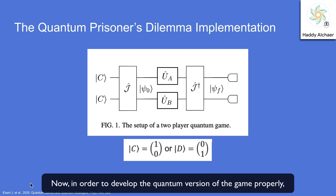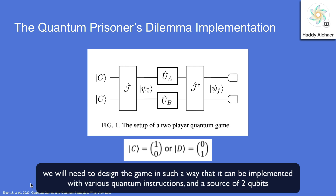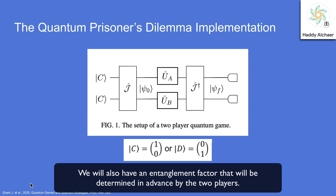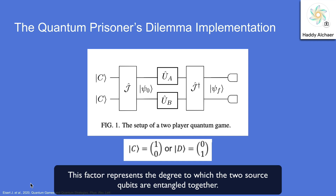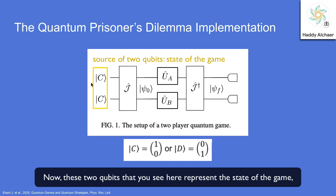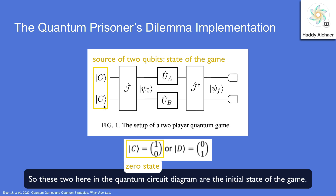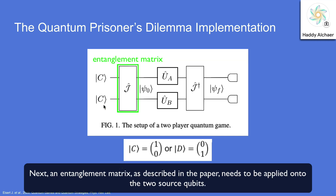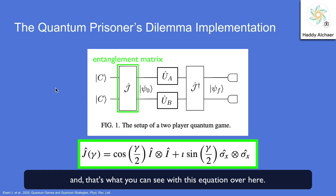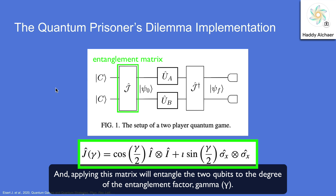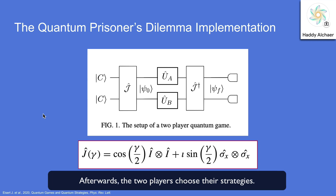In order to develop the quantum version of the game properly, we need to design the game so it can be implemented with quantum instructions and a source of two qubits — one qubit for each player. We'll also have an entanglement factor determined in advance by the two players. This factor represents the degree to which the two source qubits are entangled together. These two qubits represent the state of the game and are initialized to the zero state, shown here as the ket vector. Next, an entanglement matrix as described in the paper needs to be applied onto the two source qubits.